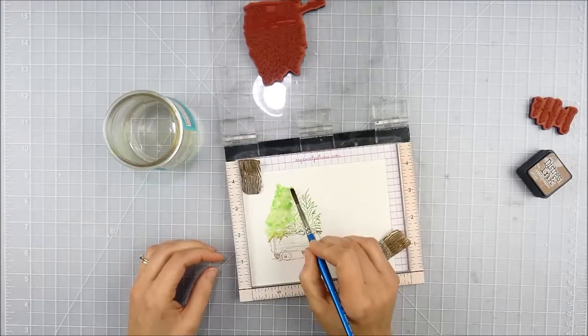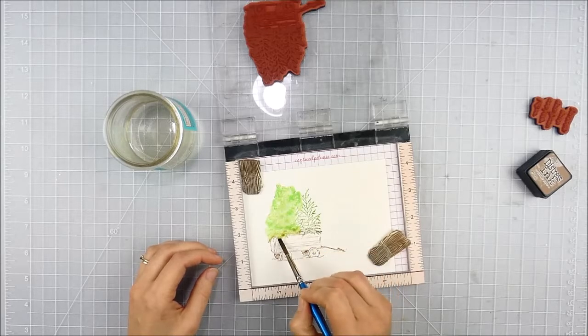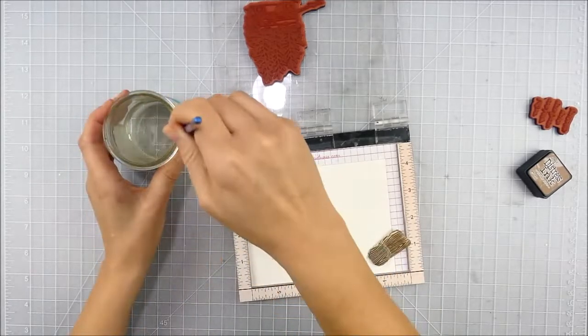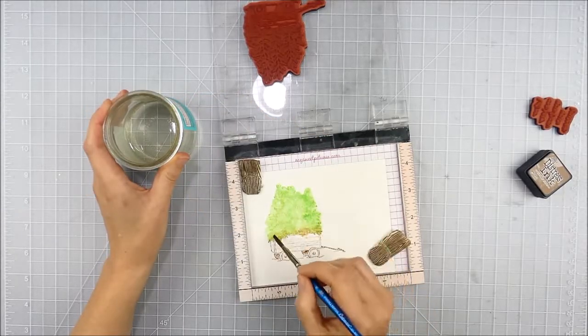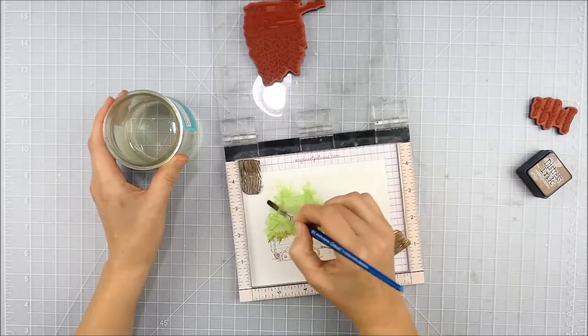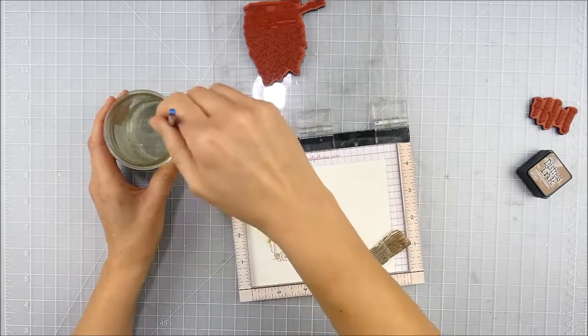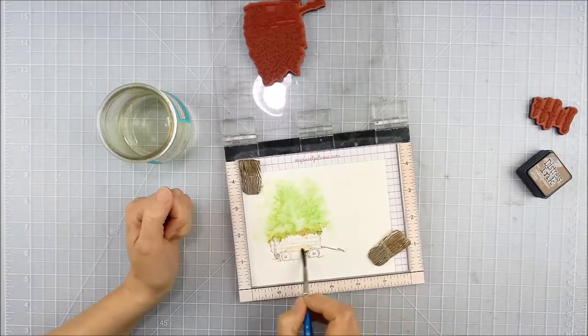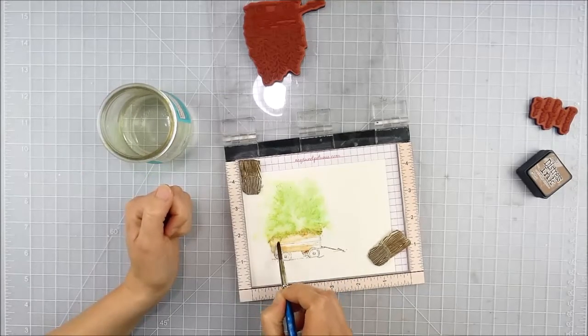Then I inked up the wagon with vintage photo, which is a great brown. You'll notice there's a little overlap in the middle, but I'm not too worried about that. Then I'm just wetting the image to let all those lines blur and adding a little extra water around the outer edges for some of that ink to flow out to give me a bit of a halo effect.